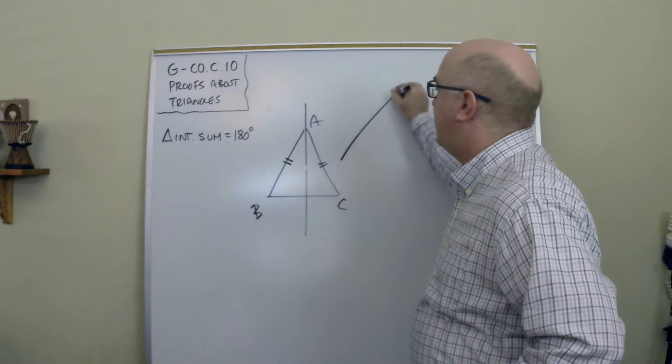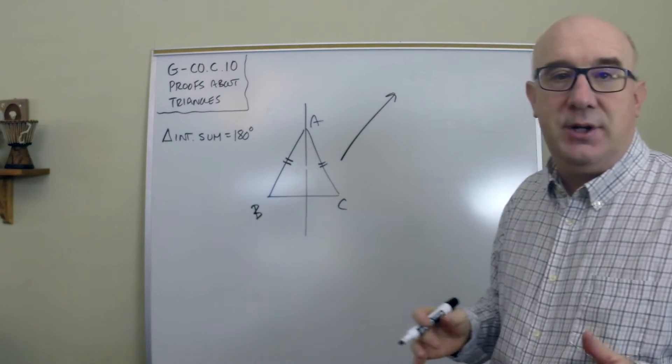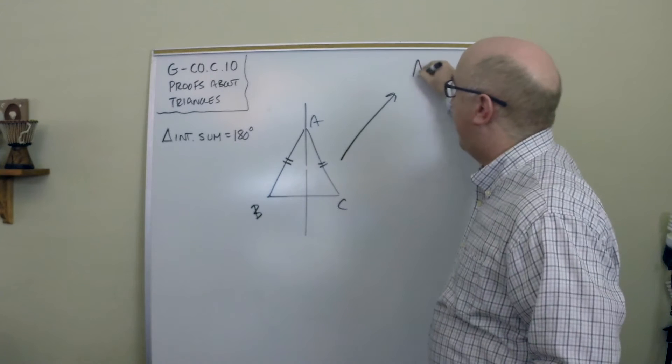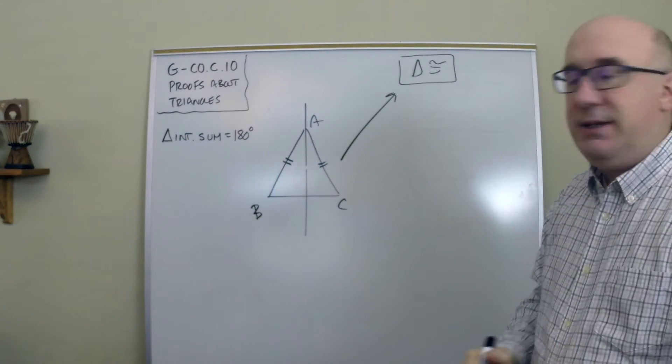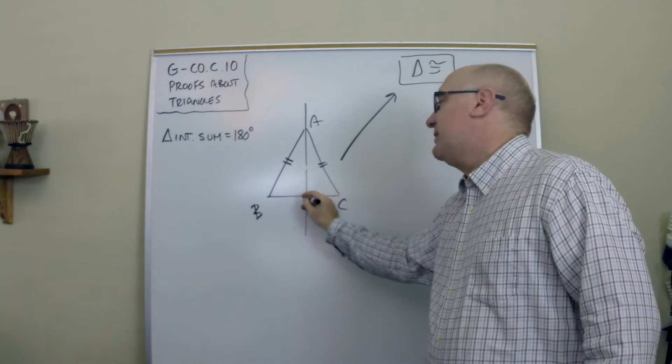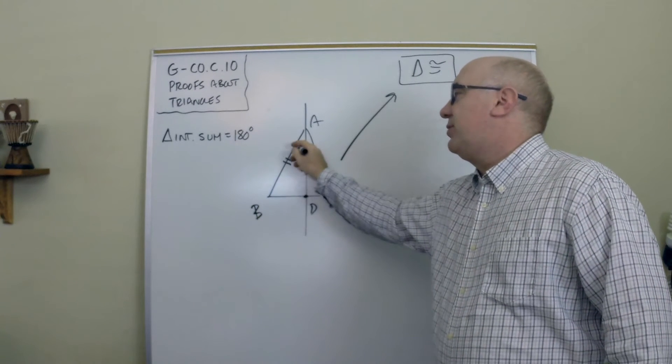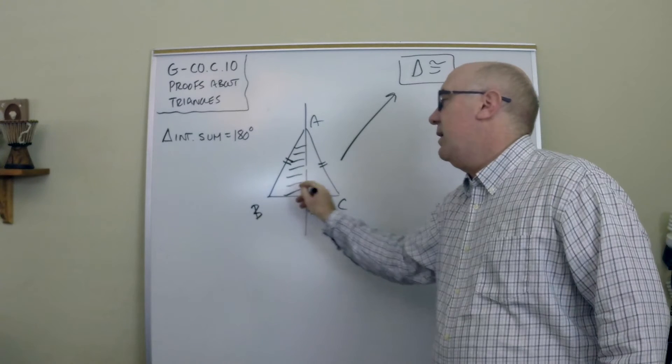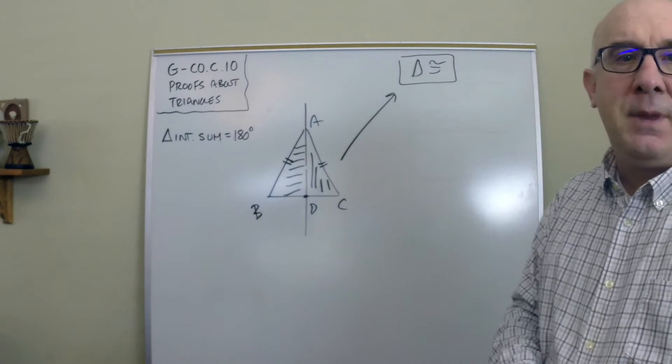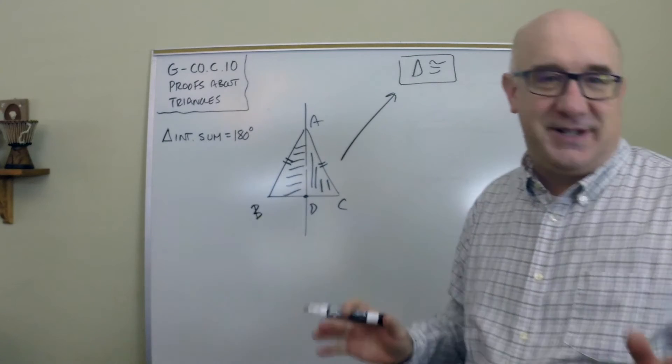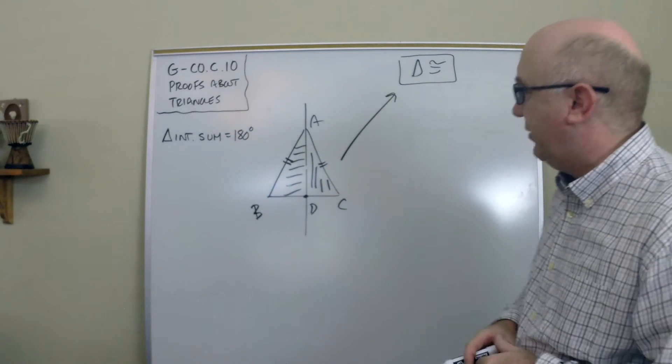You could approach it in what I would just call kind of a traditional manner using triangle congruence. And what that would mean is that you and I would work to establish that this triangle over here is indeed congruent to this triangle over here. And without writing all of the specifics, let me just kind of walk you through a few things.